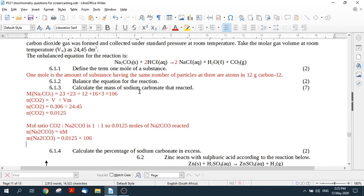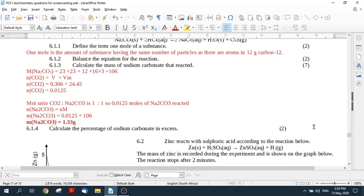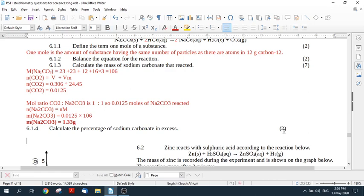So then we get if we work this out with our calculator it will be 1.33 grams. So this is the mass of sodium carbonate that reacted and that should be my final answer for seven marks. So make sure you've written in all your formulas every time and then make sure you've showed your mole ratio and all the things like that.